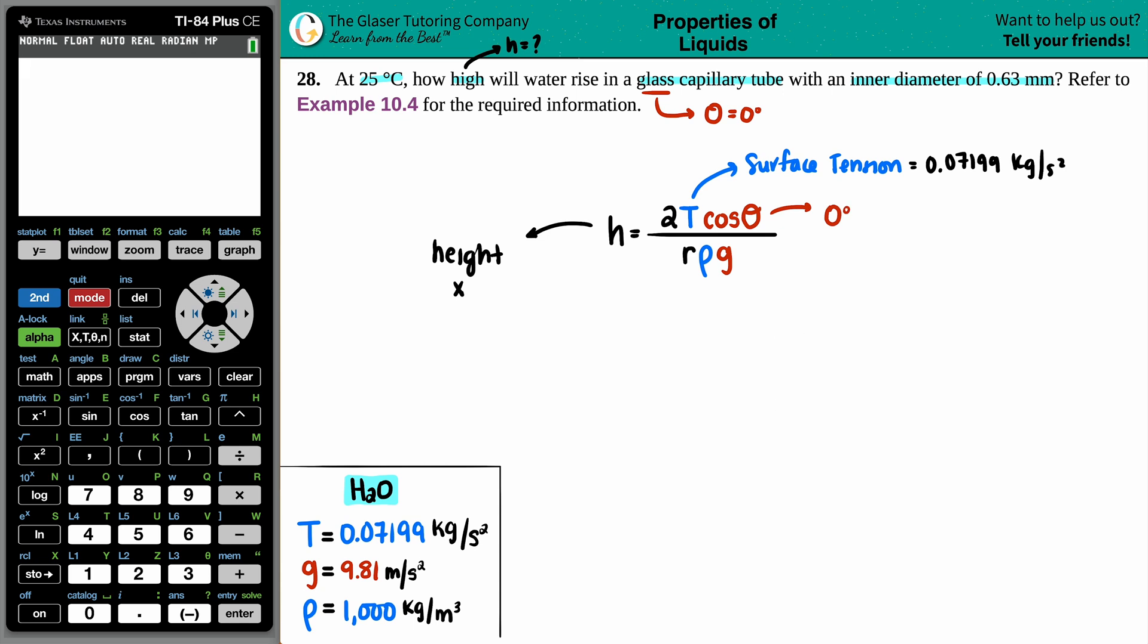R stands for radius. So this is the radius of the capillary tube, and they did say that the glass capillary tube had an inner diameter of 0.63 millimeters. Uh-oh, I gotta get the radius. But we know that if I take a diameter and divide it by two, I get a radius. So radius equals diameter divided by two. This comes from math, right guys? So my radius equals 0.63 millimeters divided by two, which is 0.315 millimeters for now.